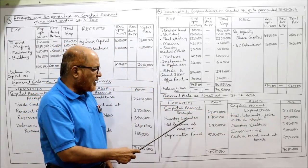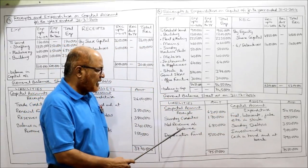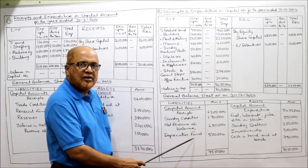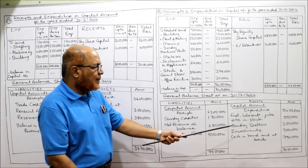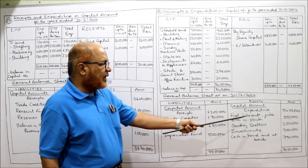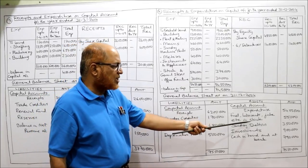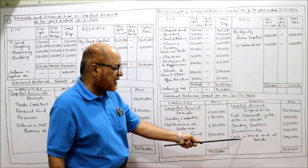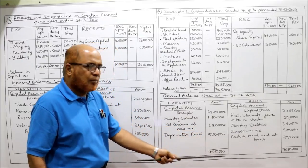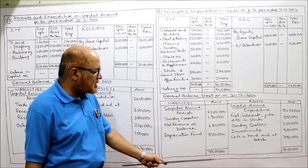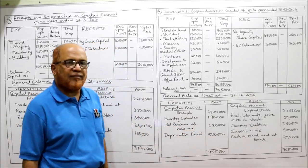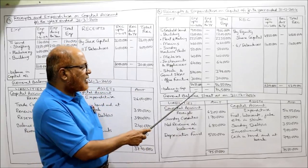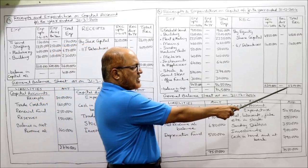The remaining items — sundry creditors, net revenue account balance, depreciation fund, fuel/lubricants/jute stock, sundry debtors, investments, and cash in hand — complete the general balance sheet. The balance sheet tallies at 75 lakh 50 thousand. The balance in the capital account is 7 lakh 45 thousand. Problem number 4 is now completed.